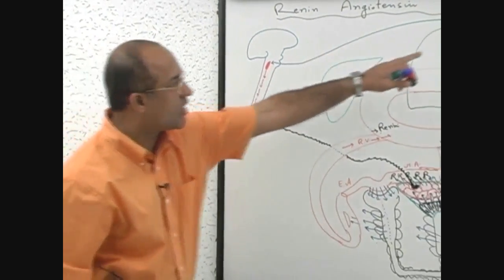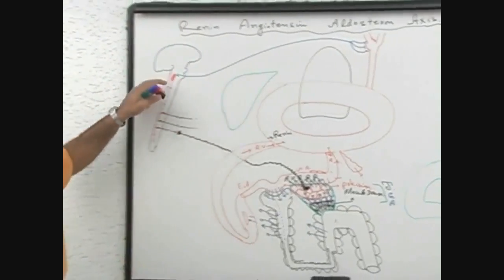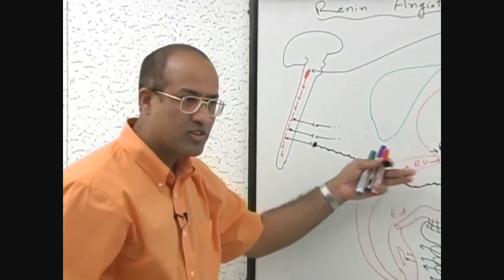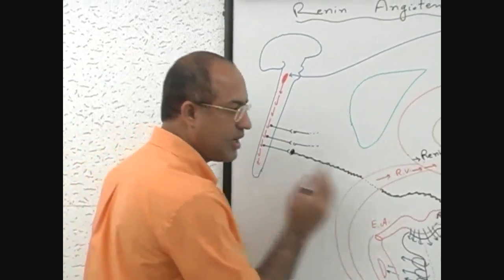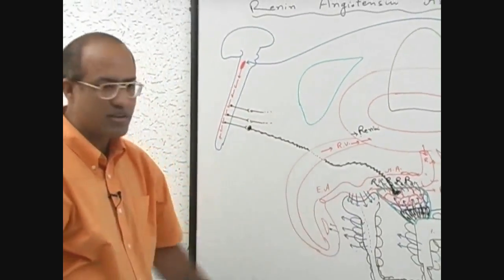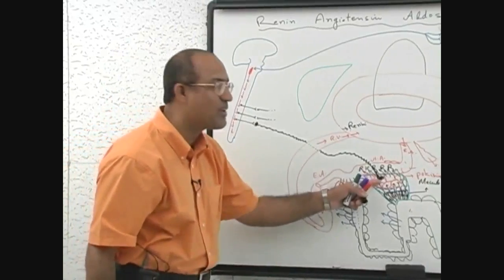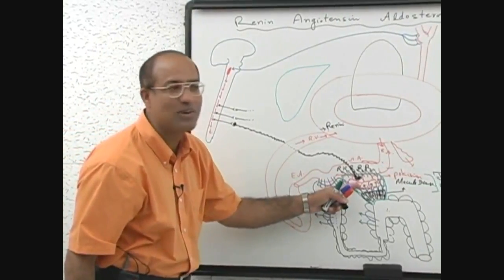As soon as blood pressure starts going down, the vasomotor center is stimulated and a lot of sympathetic outflow comes. Some of the sympathetic fibers come to juxtaglomerular apparatus and the neurons will release norepinephrine.